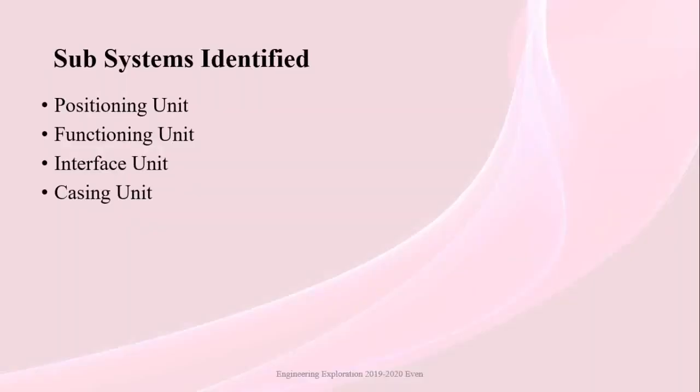With reference to required functions, we identified 4 essential subsystems: the positioning unit, which takes care of positioning on the board and the striking position; the functioning unit, which handles adjustment of firing angles and striking impact forces; the interface unit, which handles sensing of the coin and alerting the user; and the casing unit, which provides a protective case for all components.